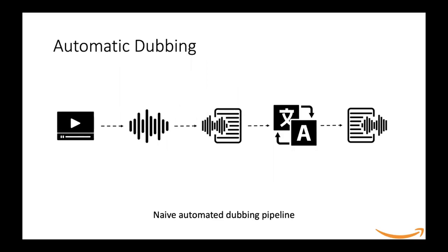A naive automated dubbing pipeline is shown as follows. We start with the source video, extract the audio, and after some pre-processing steps such as pre-emphasis and removal of background noise, we convert the audio to text. Then we translate the text in the source language to the text in the target language, and finally convert it to audio in the target language using a text-to-speech system.